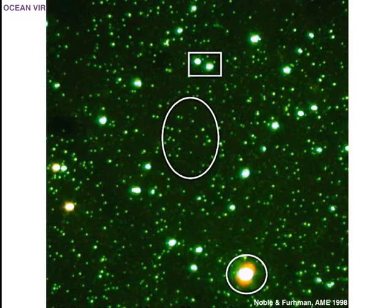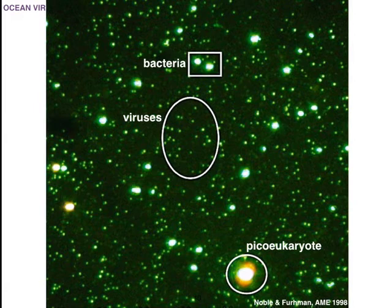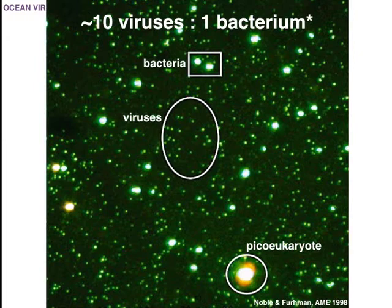Those estimates came purely from numbers. By the late 1990s, fluorochemistry had evolved to the point where we could identify tiny particles with a fluorescent microscope. In a single drop of water, you could simultaneously count bacteria, viruses, and small eukaryotes in a high-throughput fashion. This gave us a ballpark estimate of about 10 viruses per every bacterium, though it varies across environments.